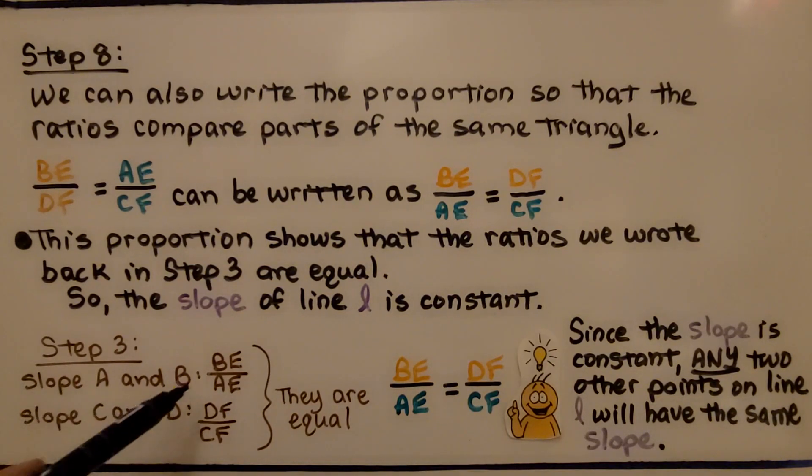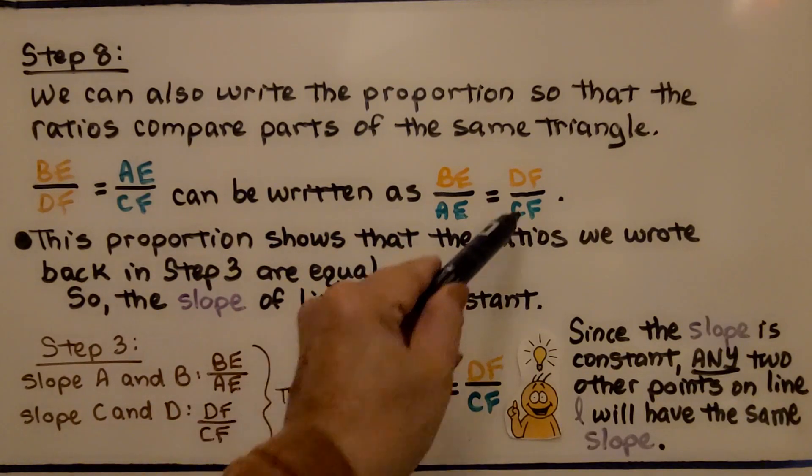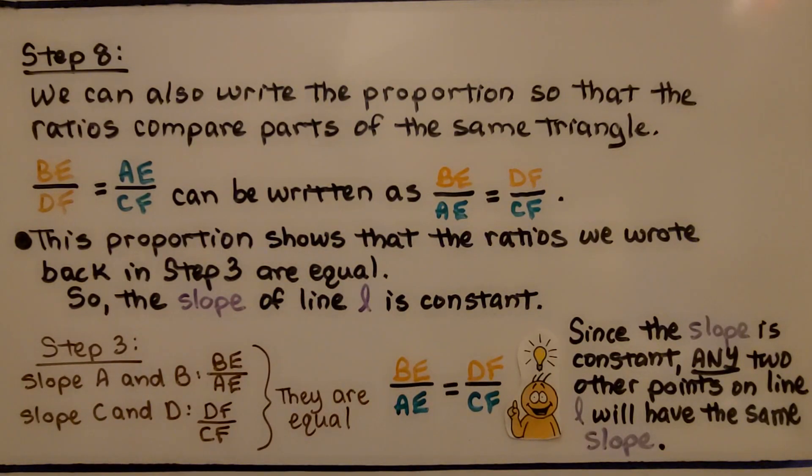Back in step three, we had BE over AE and DF over CF. Since the slope is constant, any two other points on the line L will have the same slope as these.